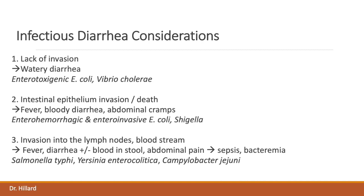Hopefully you recognize this slide. In brief review, enteric organisms that do not invade the bowel wall, like enterotoxigenic E. coli and Vibrio cholera, present with a watery diarrhea. Those that invade into the epithelium, including enterohemorrhagic and enteroinvasive E. coli along with Shigella, create bloody diarrhea. Finally, those that both invade the bowel but are also introduced into the lymph nodes and/or bloodstream can present with additional symptomatology, such as severe abdominal pain or pseudo-appendicitis, like seen with Yersinia enterocolitica.